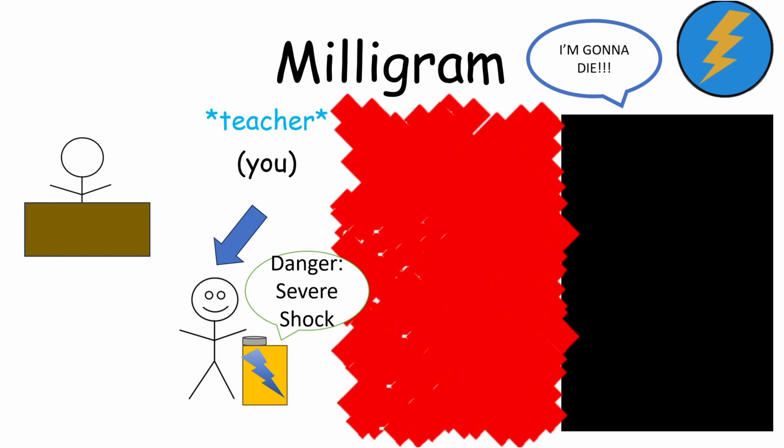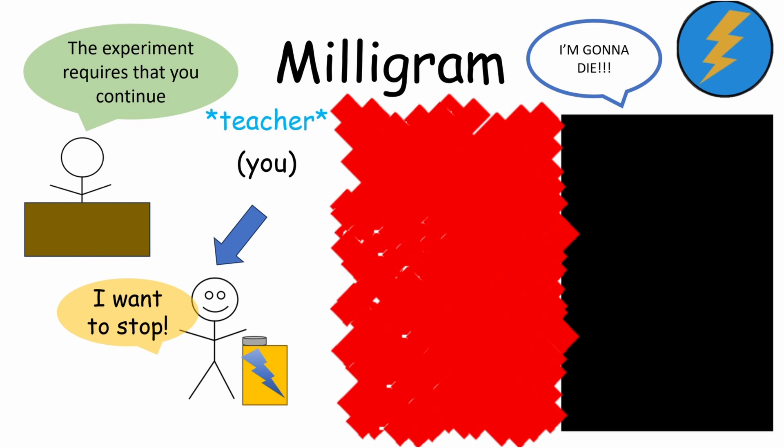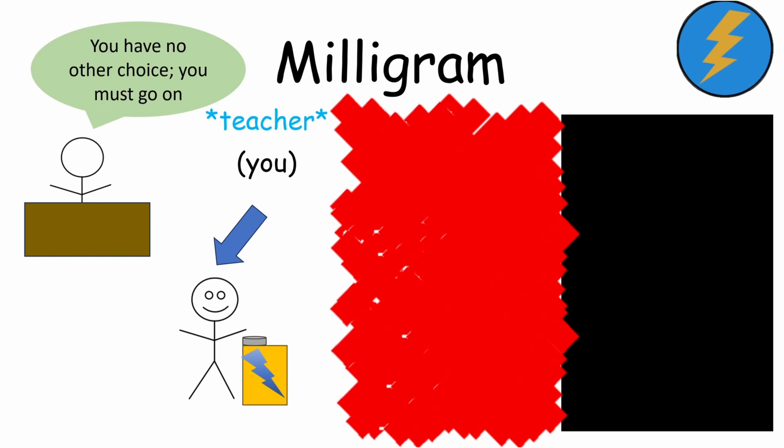You finally have enough and tell the experimenter you want to stop. Please continue. No. The experiment requires that you continue. I want to stop. It is absolutely essential that you continue. But you have no other choice. You must go on.